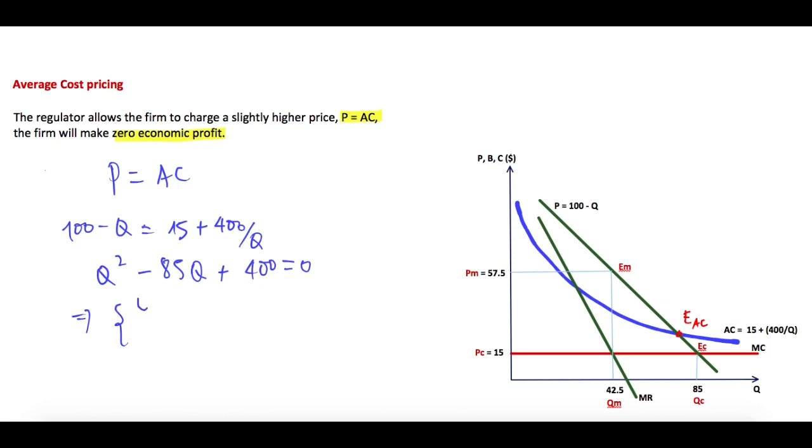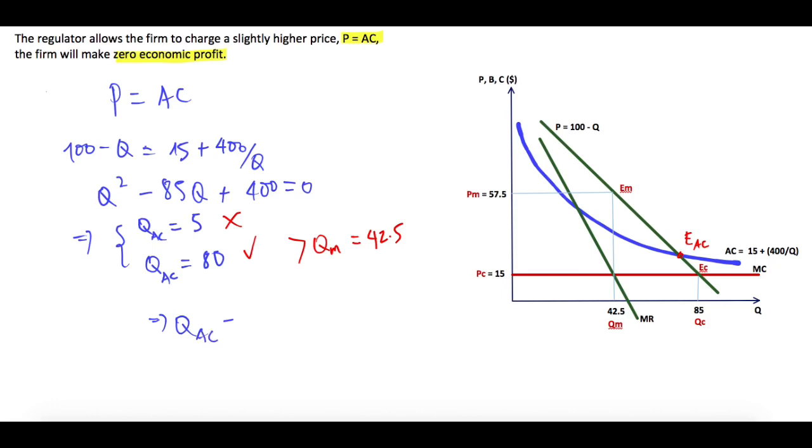two results: Q equals 5 and Q equals 80. Actually it's QAC, right? And the first one is not acceptable; the second one is okay because it should be higher than QM equals 42.5. So we have QAC equals 80.